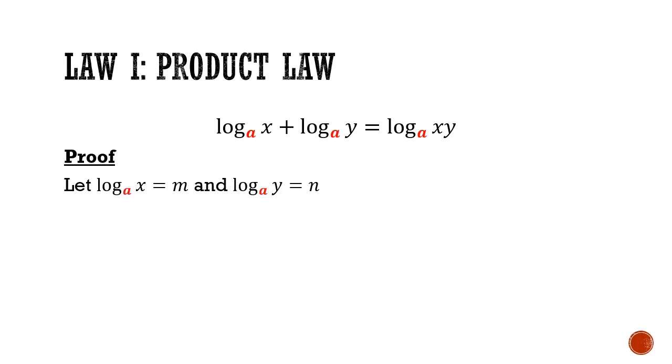The proof is as follows. We will reference the index laws by first letting log base a of x equals to m, and log base a of y equals to n. Then we will convert both equations from their log form into their index form. Then we multiply both equations together, so the left-hand side will be just x times y. And on the right-hand side, we will apply our index laws of addition. So a to the power of m times a to the power of n gives us a to the power of m plus n. This equation, now we can switch it back from index form back to its log form. And we will substitute away m and n to give us law 1.